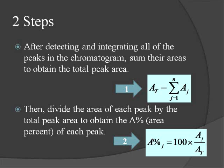To summarize what we've done, our process consists of two steps. After detecting and integrating all of the peaks in the chromatogram, we sum up all of their areas to obtain the total peak area. Then we divide the area of each peak by the total peak area, and multiply the quotient by 100 to obtain the area percent.